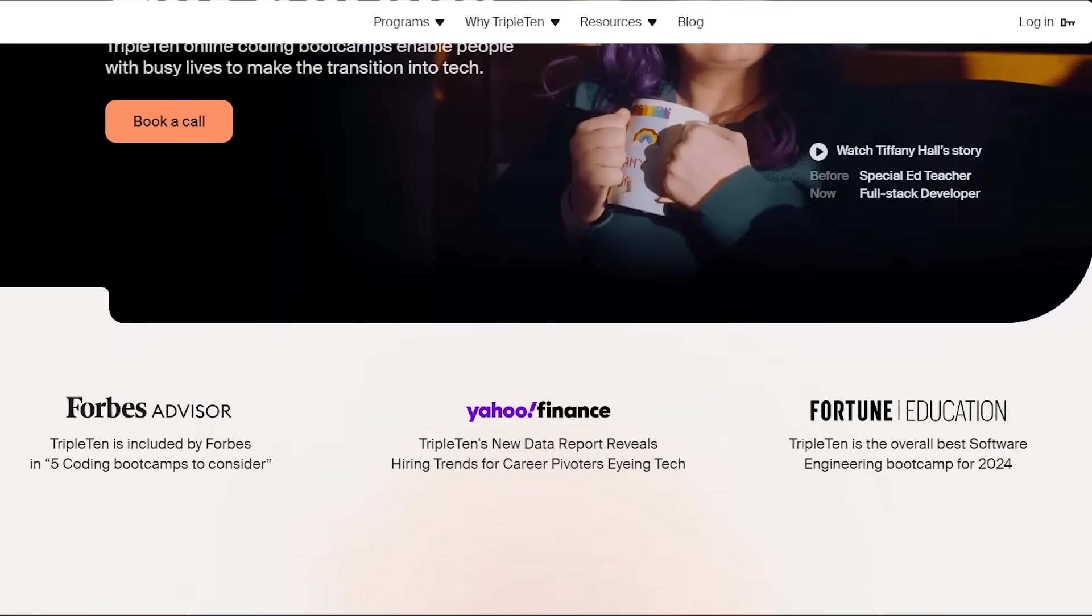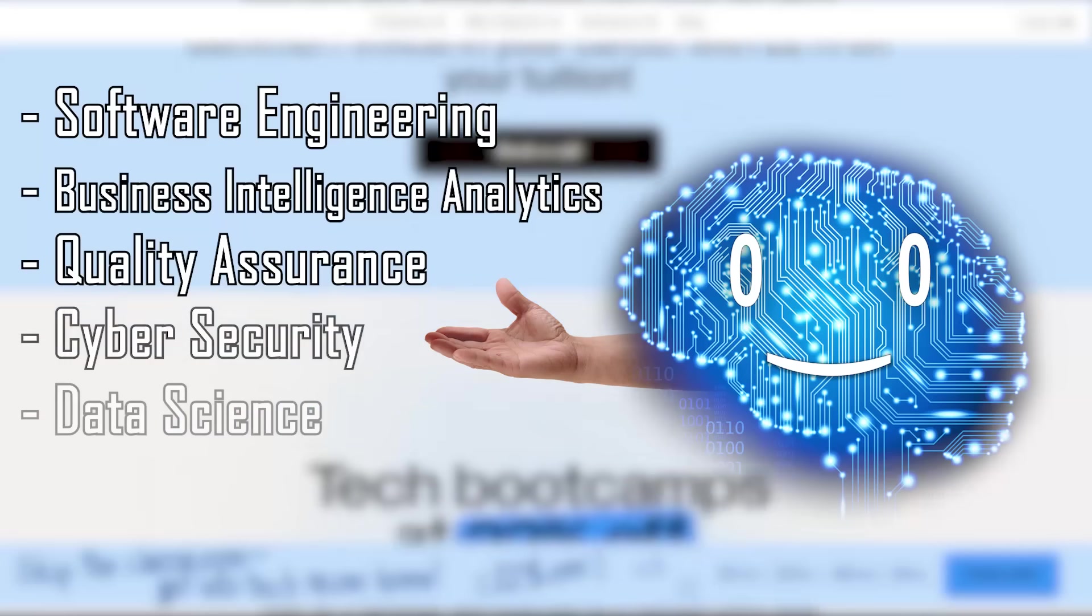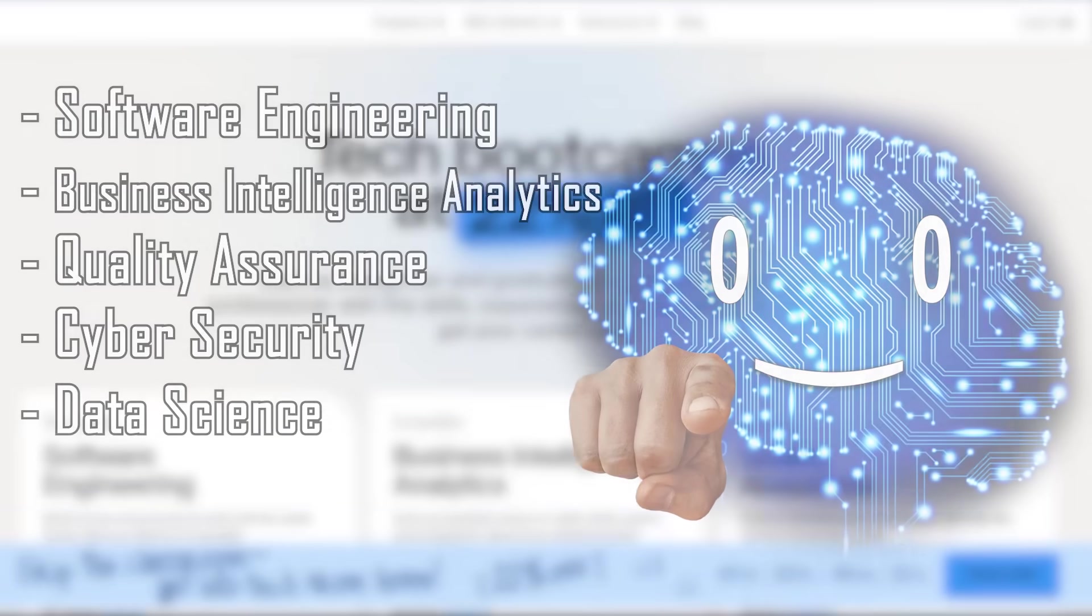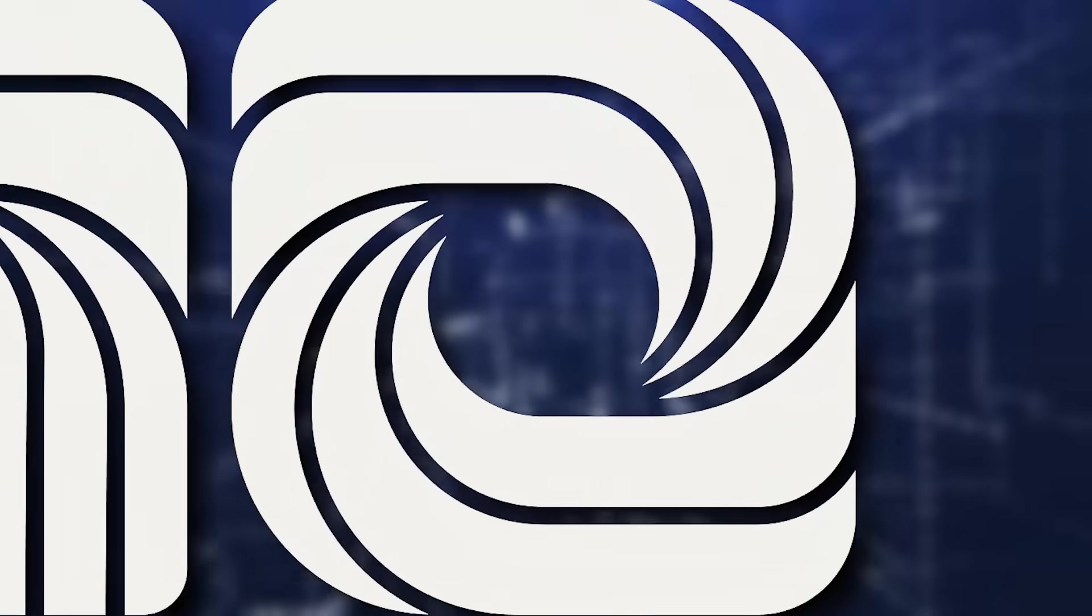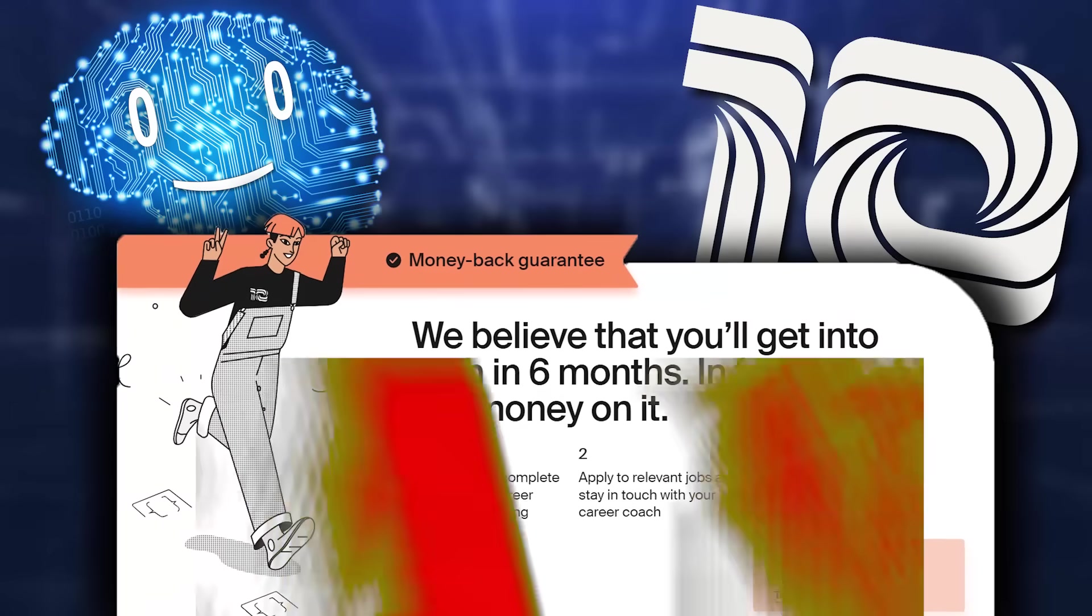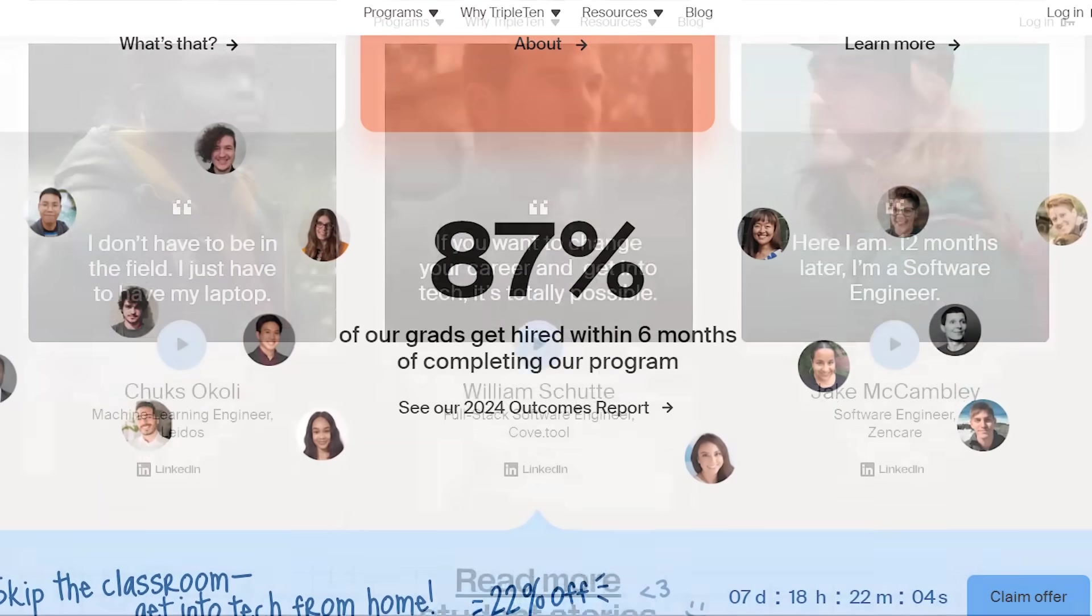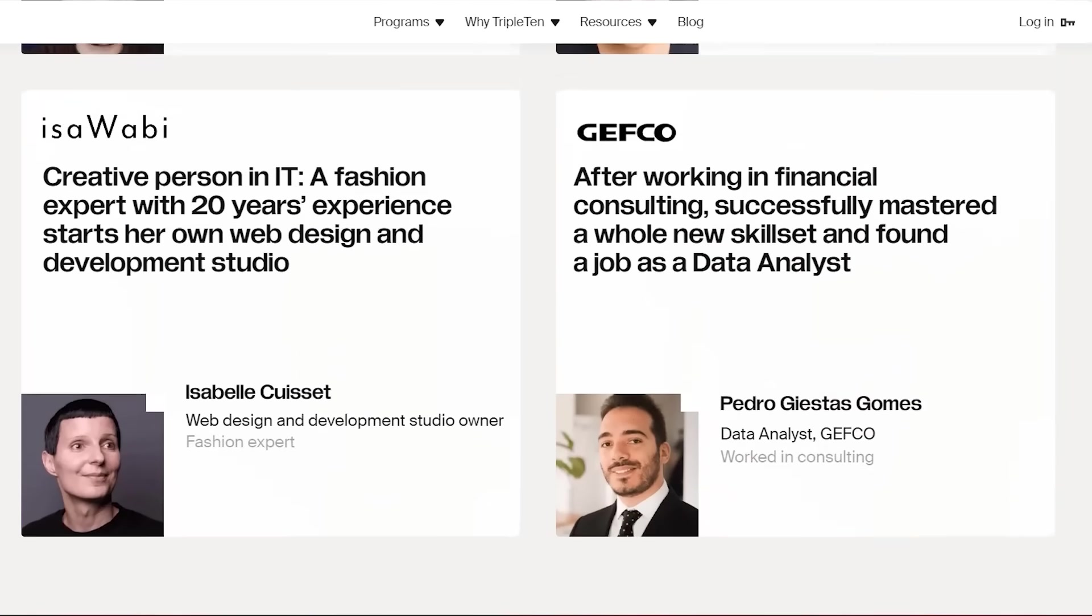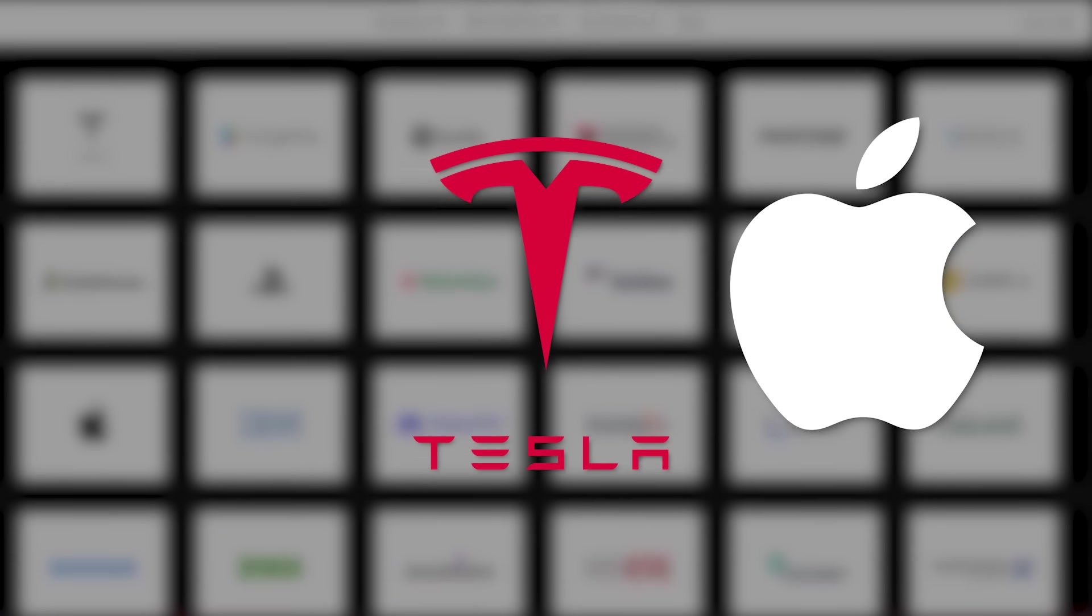Triple 10 is a beginner-friendly bootcamp with no need for a prior tech background. At one of their bootcamps, you can learn an in-demand tech profession in 5 to 12 months without any background. What sets Triple 10 apart is its get a job or get a refund guarantee, and the fact that 87% of its graduates get hired within 6 months. And their graduates are already working for giants like Apple, Tesla, Google Play.